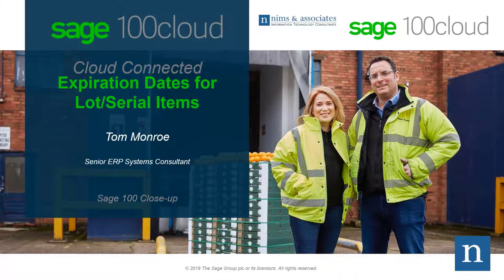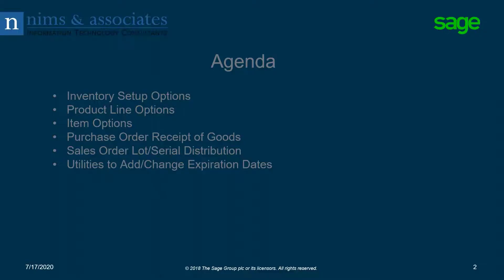Let's take a look at our agenda. The first thing we're going to do is look at some new inventory setup options, which roll into new product line setup options, which in turn roll into item options. The purpose of the expiration dates is to allow you to determine what lots or serial items to sell based on those expiration dates, and they've introduced a concept called sell-by date as well.